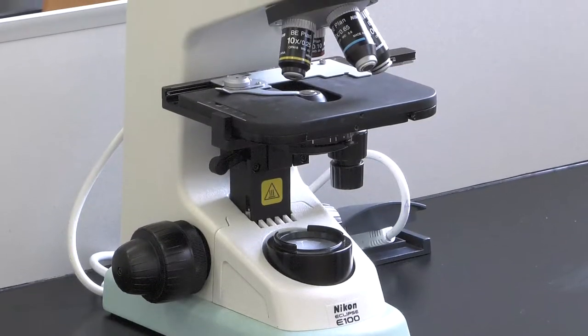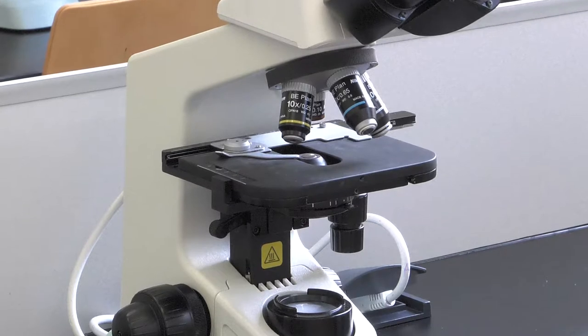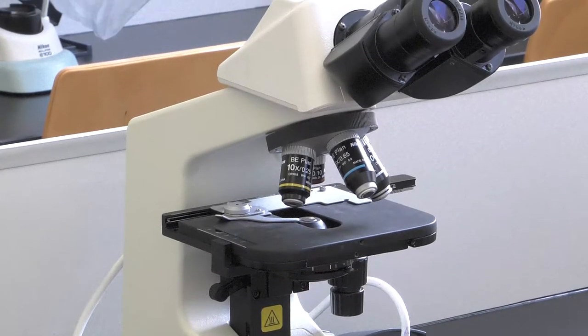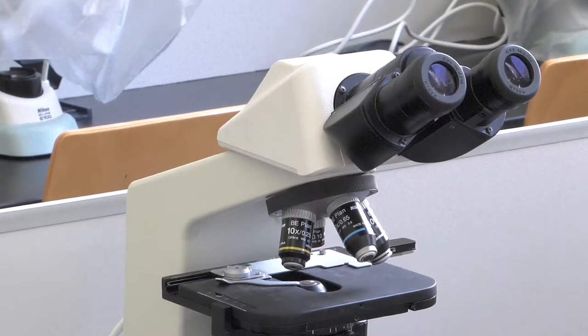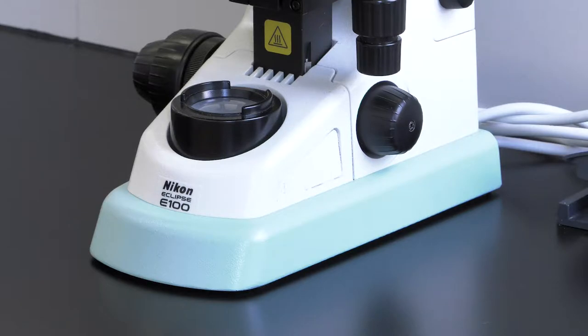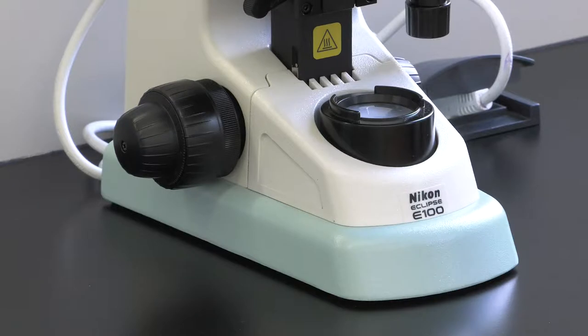Next, we will describe the different parts of the microscope from the bottom to the top. The first element we find is the base. It is a support element wide and heavy enough to prevent the instrument from losing its stability and falling down.